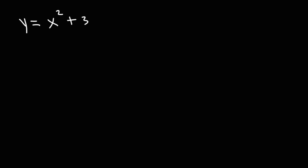Let's work on another example. We have y equal to x squared plus 3x minus 1, and y equal to x squared minus 4x plus 6. Go ahead and solve this system of nonlinear equations. In this case both equations are nonlinear. We could use substitution or elimination.